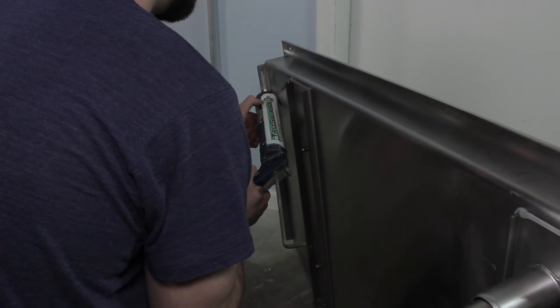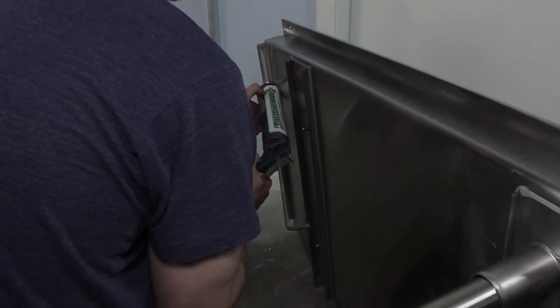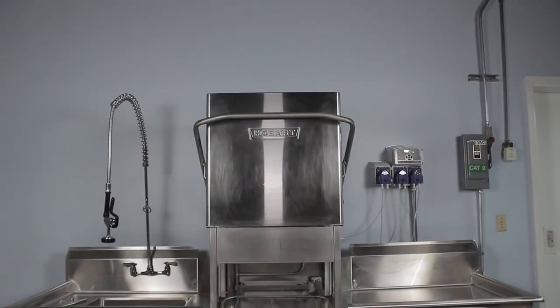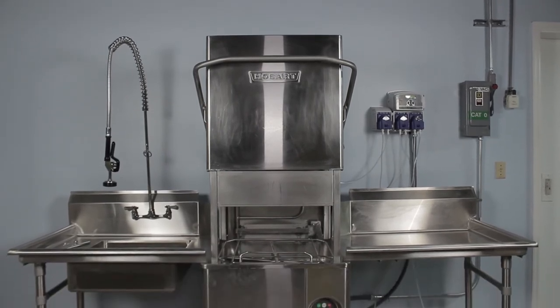Once you know the placement and they are level, apply some sealant to the lip and reattach to the machine. For added stability, attach tables to the dishwasher using screws.